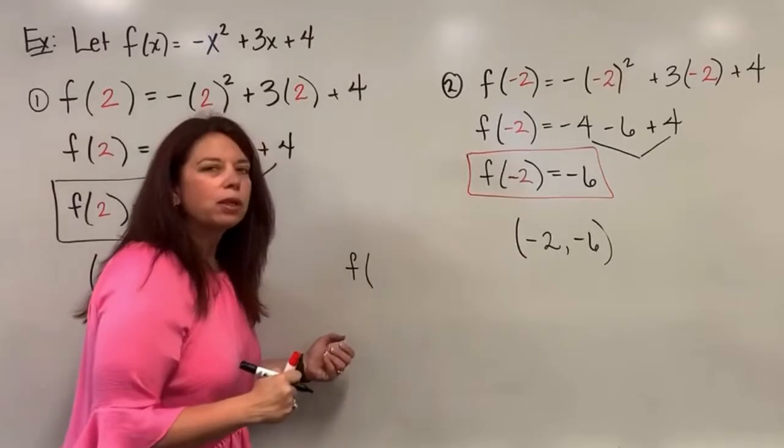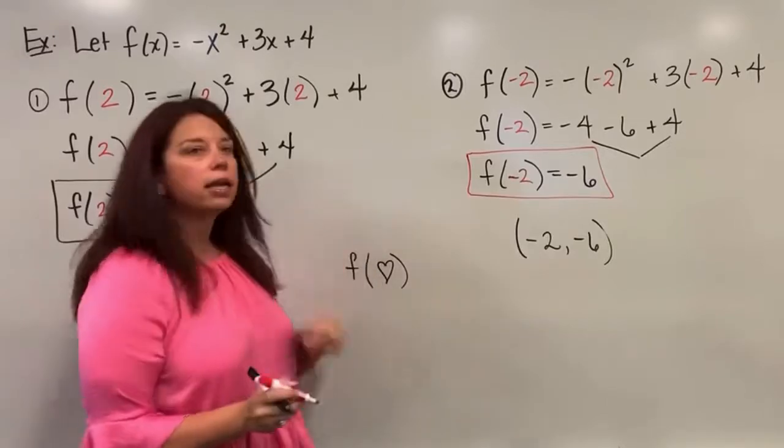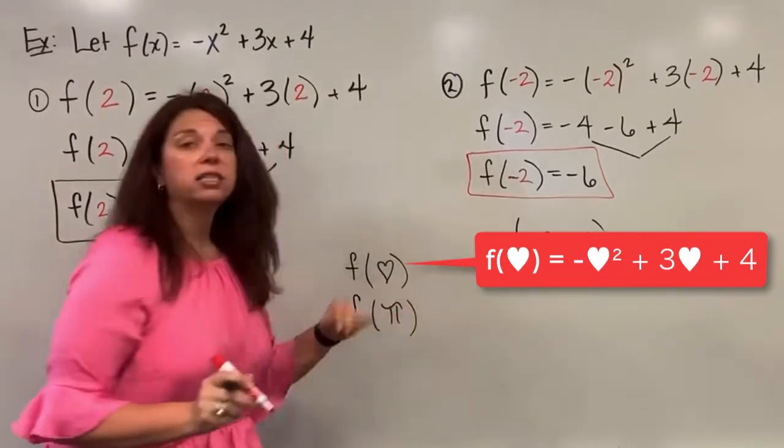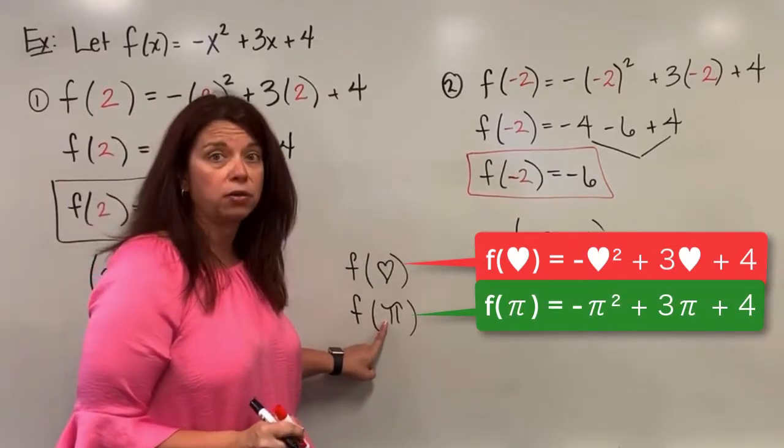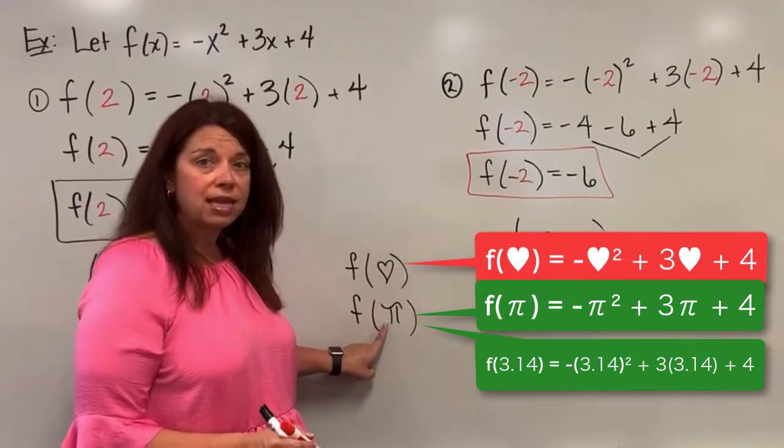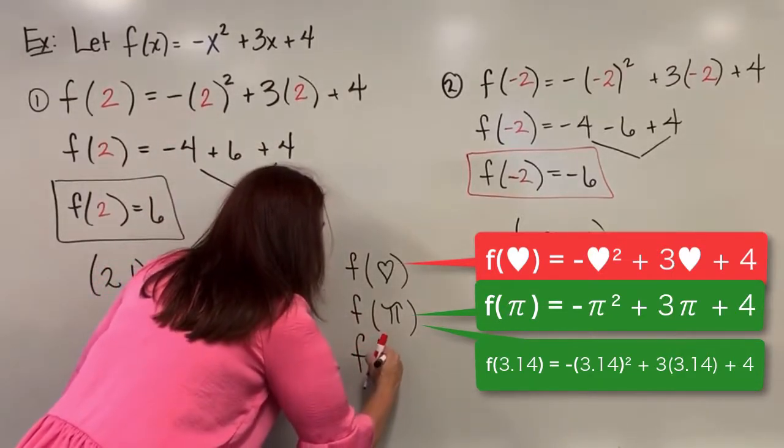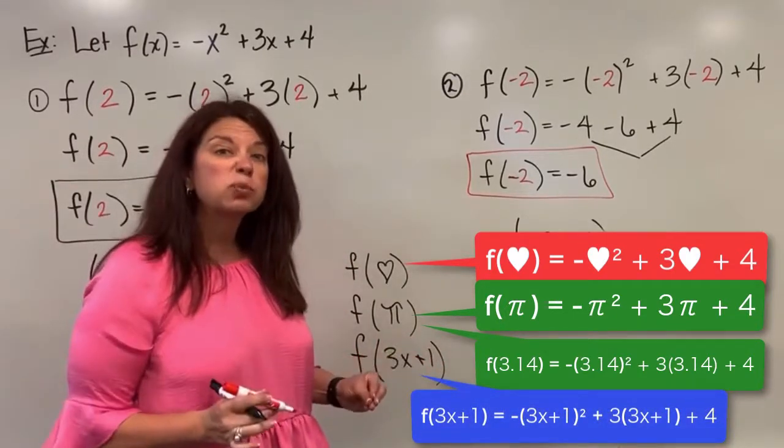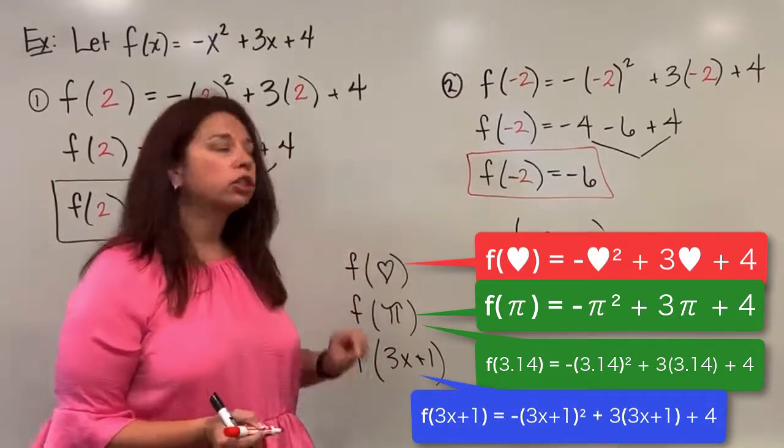Let's just be fun and say what if I really wanted to find like f of heart? Well, all that would tell me to do is take a heart and plug it into my function. What if I wanted to find f of pi? Well, pi is a perfectly good number. It looks like a little symbol here rather than an actual numerical value, but it is a numerical value 3.14159 and it keeps going forever. Same idea though, I could simply take that and substitute it into my function f. You could even get more crazy if you wanted to do something like f of 3x plus 1. All that says is take 3x plus 1 as a unit, as a quantity together, and plug it in, substitute it into my function just as I did my numbers.